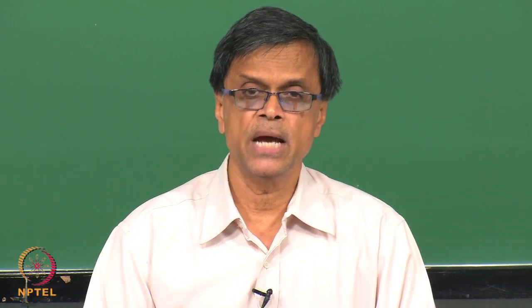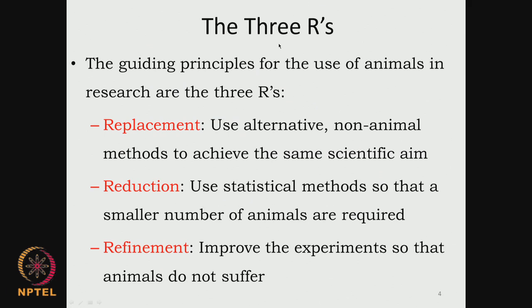There are 3 important guiding principles when you are looking at animals, they are called the 3 R's in animal research. One is called replacement, the other is called reduction, and the other is called refinement.